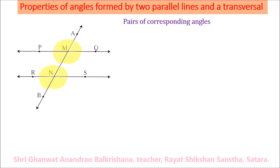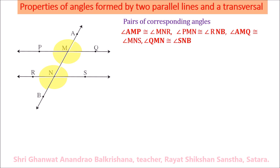When two parallel lines are intersected by a transversal, each pair of corresponding angles are congruent. The congruent corresponding angle pairs are: angle AMP and angle MNR, angle PMN and angle RNB, angle AMQ and angle MNS, and angle QMN and angle SNB.